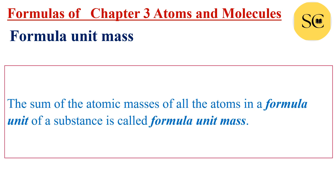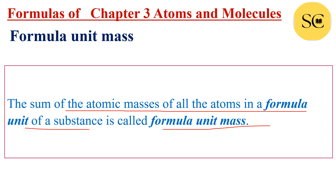Formula unit mass: the sum of atomic masses of all atoms in a formula unit of a substance is called formula unit mass. So for any given substance, its one unit formula — all the atoms present in that formula — the sum of their atomic masses is the formula unit mass.